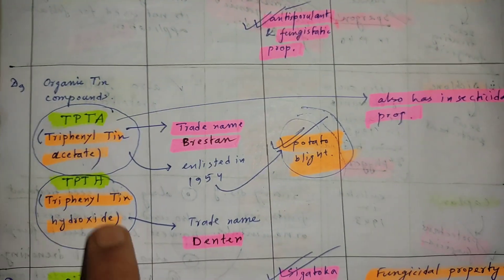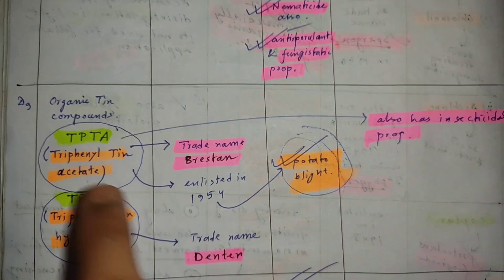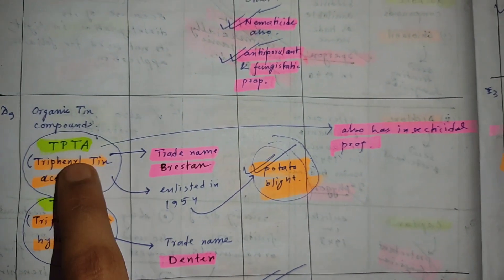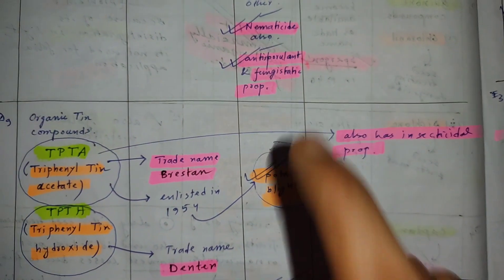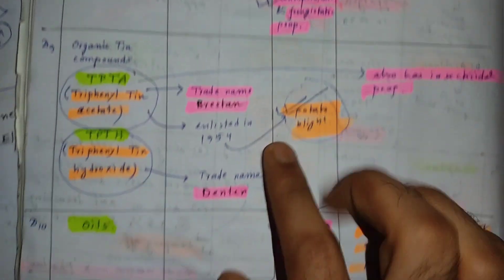TPTA has insecticidal property too, and TPTA is used to control potato blight. These are the important points you have to remember.